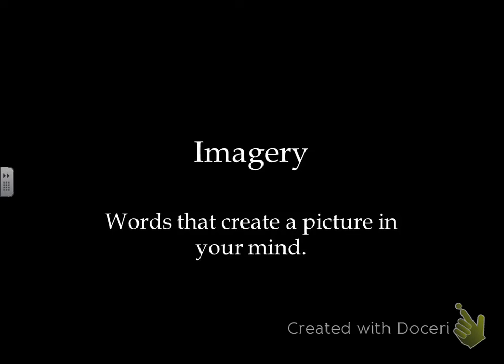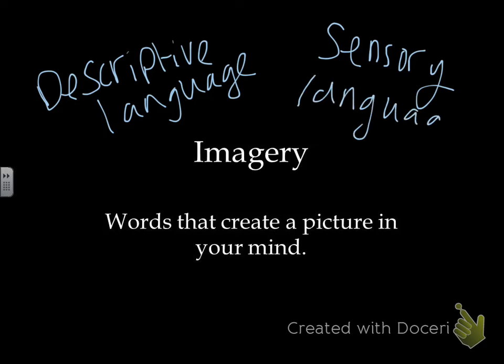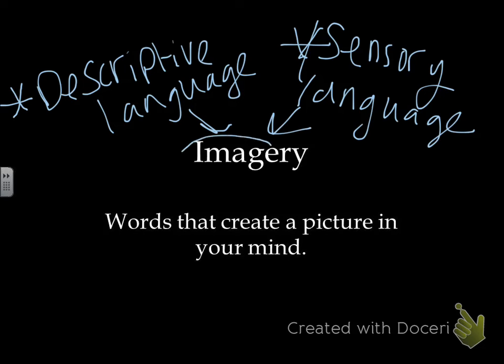The last term is imagery. Imagery is words that create a picture in your mind. We often use descriptive and sensory language — which we discussed in narrative writing — to create imagery. When we describe things using the five senses, we create an image in the mind of the reader. Make sure you go back through these words if you missed anything, and then complete the rest of the activities in this folder.